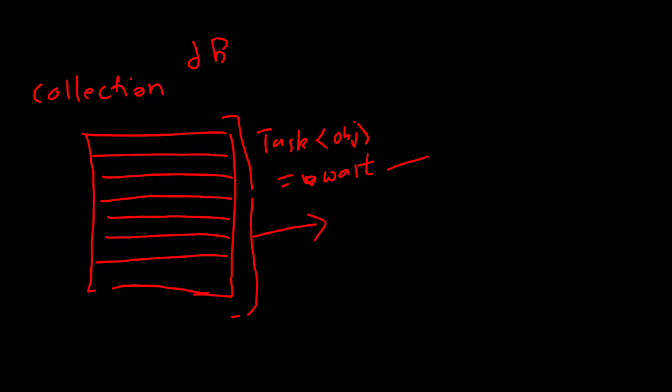If there are 10,000 records in my collection, my code will first wait for all 10,000 records to be fetched into memory, and then those are returned as a combined list or combined collection back to the invoker. Things work a bit differently when we actually use async streams or IAsyncEnumerable.